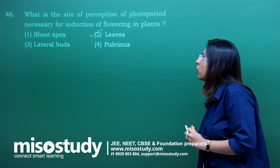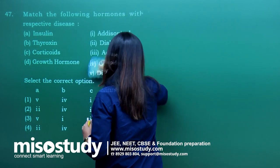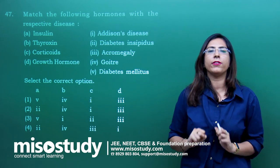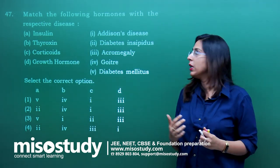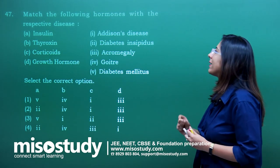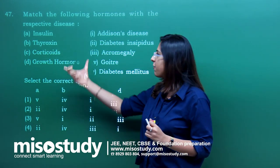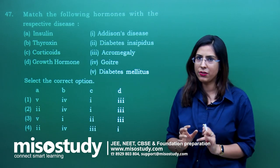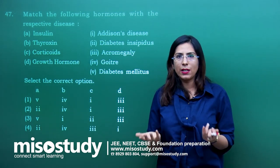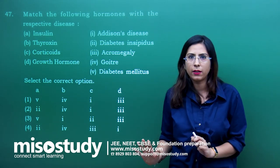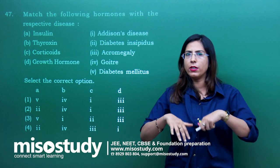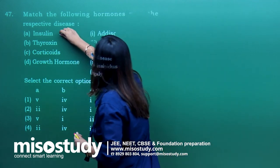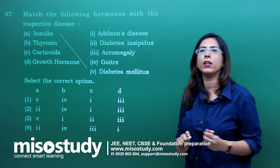Question number 47 — match the following hormones with the respective disease. These types of questions related to hormones and diseases are frequently asked in exams. A is insulin. Insulin regulates glucose level in blood. Those whose insulin is not produced in appropriate quantity suffer from diabetes mellitus. So for A, the correct option is fifth. B indicates thyroxin — related to the thyroid gland. The correct option for B is goiter, in which swelling of the thyroid gland occurs.